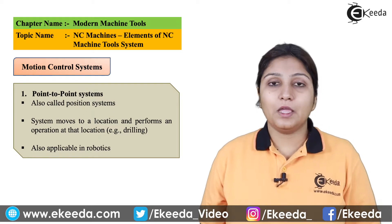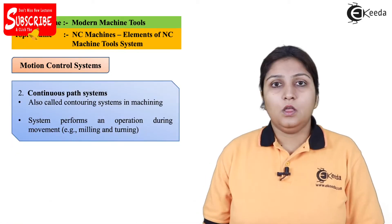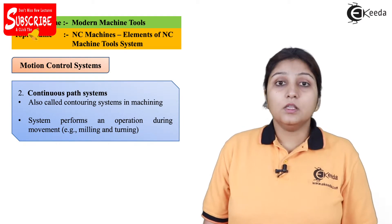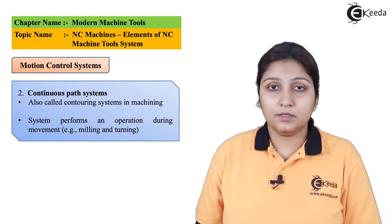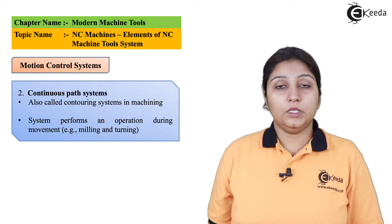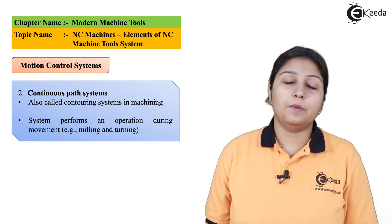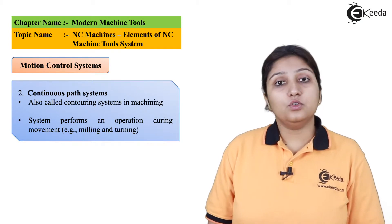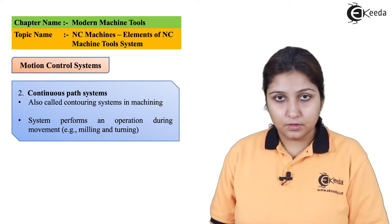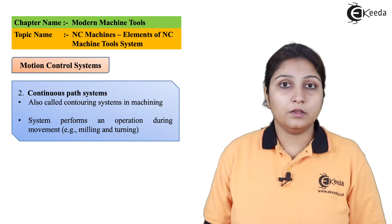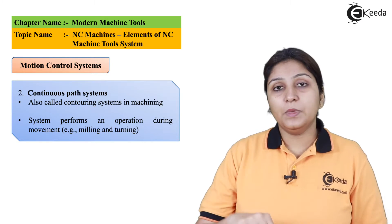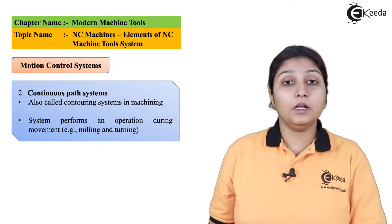The supply of coolant should be proper. Another operation that can be carried out using NC machining is the continuous path system, where milling and turning operations are performed. The path can be traced continuously — as in end milling — where the cutter moves in a continuous direction rather than point to point.